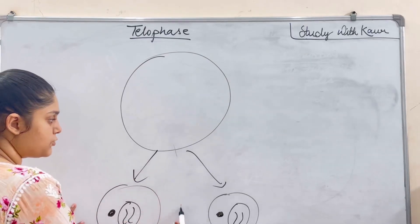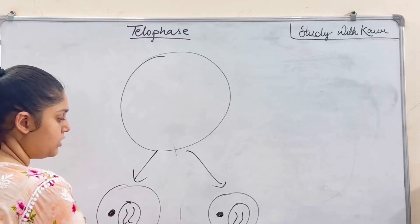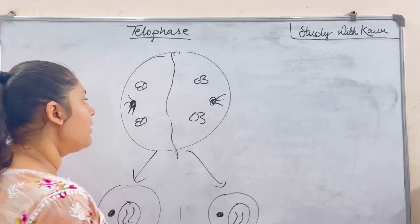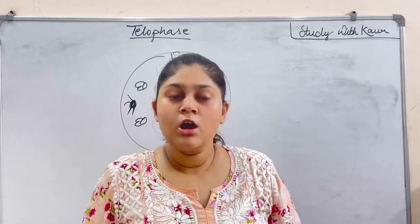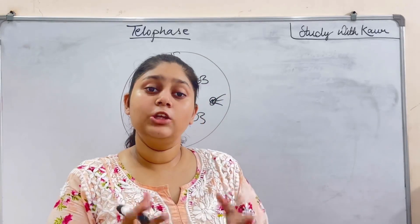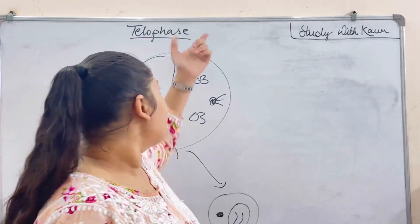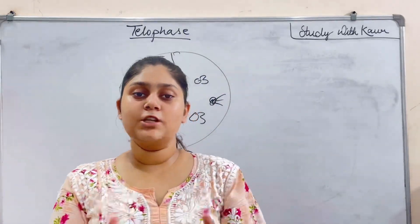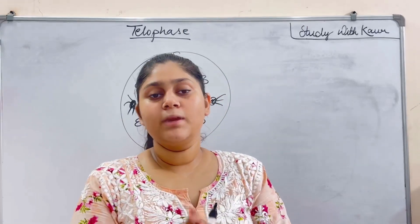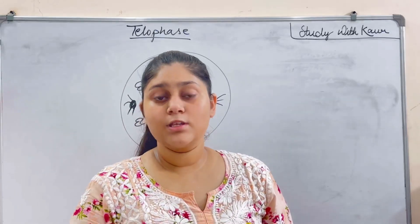In telophase, the cell divides into two daughter cells. The spindle fiber disappears and the nuclear membrane reappears — it is exactly opposite to prophase. The importance of mitosis is for replacement, repair, and growth, and the importance of meiosis is for reproduction.